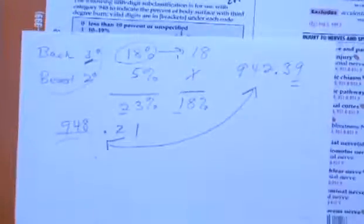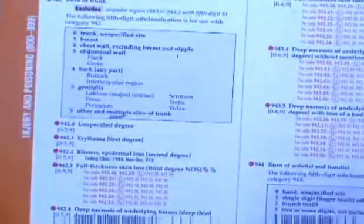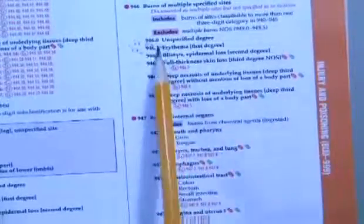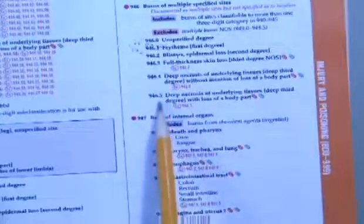And then just to finish up the discussion, if you have multiple, multiple burns, like you can't fit them in the number of slots that you have, there is code 946, which is burns of multiple specified sites. So if you're going to use that category, obviously they're not going to use location because you're saying it's multiple, but you use the same 4th digits. So that is burn coding.